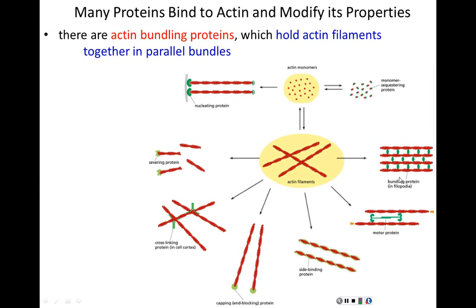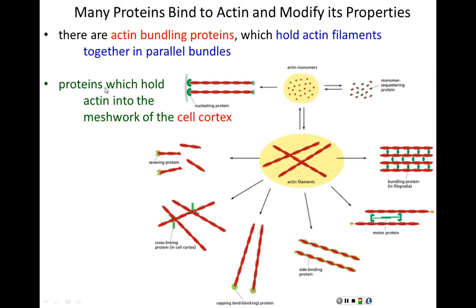There are proteins which hold actin into the meshwork of the cell cortex. These cross-linking proteins cause a two-dimensional grid or woven basket pattern to be formed of actin filaments, providing durability to the underlying protein scaffolding of the cell membrane, very much like the nuclear lamins did in the microtubule and intermediate filament story.